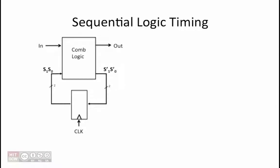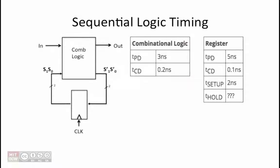In this problem, we are going to take a look at the timing constraints associated with sequential logic circuits. We are given a generic state machine diagram which has two state bits. We are also given the timing parameters for the combinational logic and the state register.